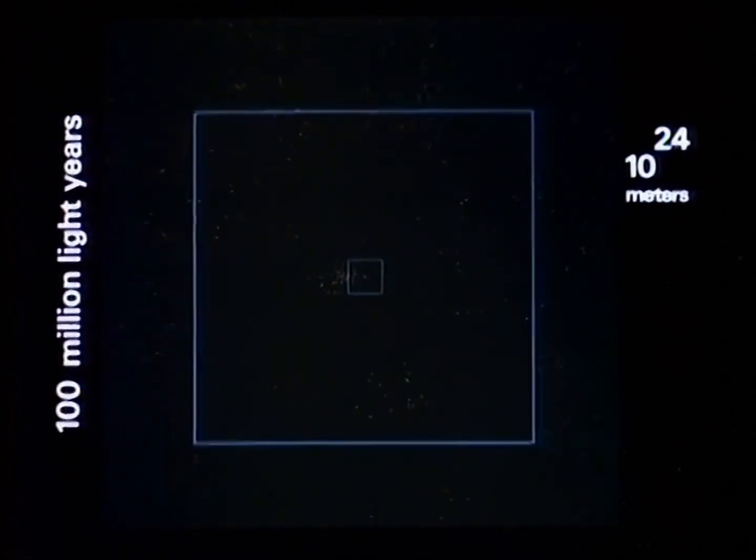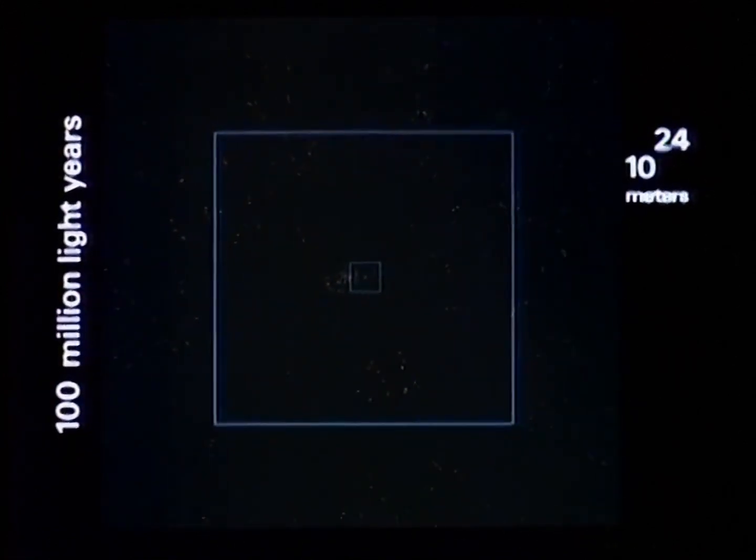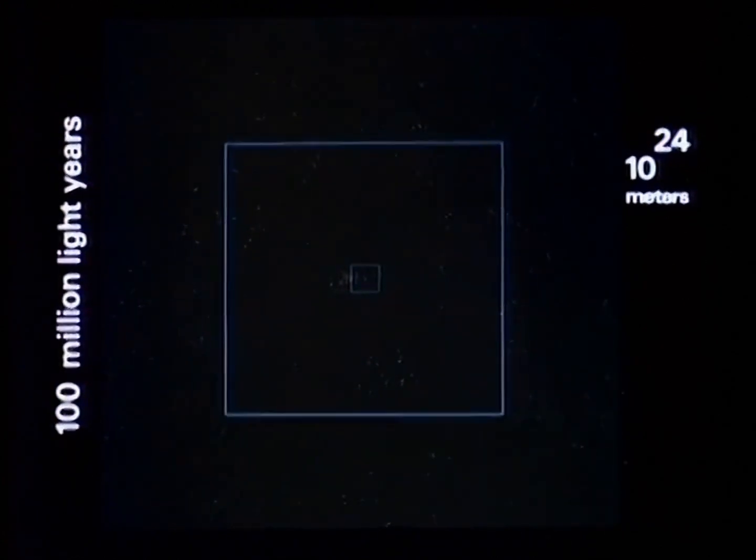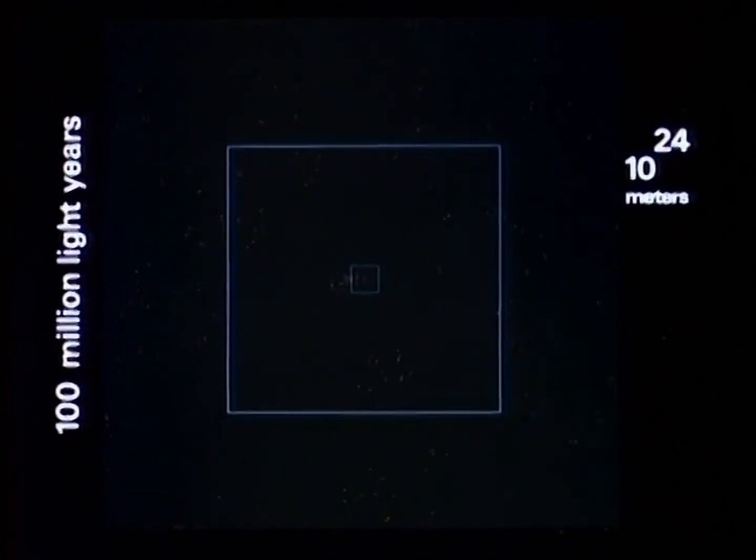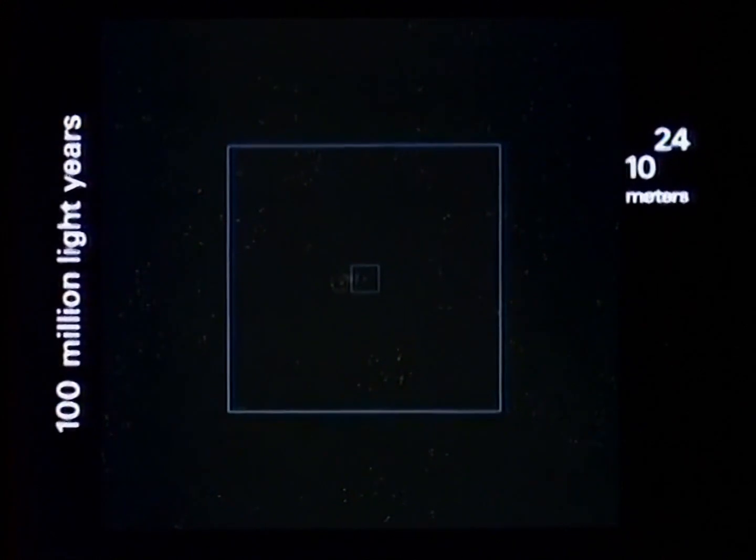As we approach the limit of our vision, we pause to start back home. This lonely scene, the galaxies like dust, is what most of space looks like. This emptiness is normal. The richness of our own neighborhood is the exception.